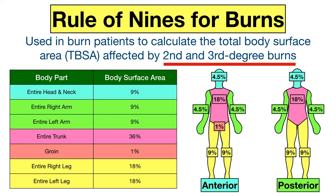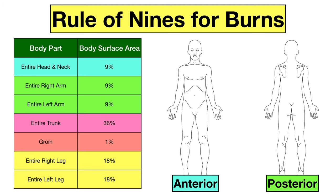Let's walk through the table and diagram and you'll quickly see why it's called the rule of nines and how it works. The rule of nines provides you with an estimated percentage of the body surface area for different body parts. Let's take a look at the table.